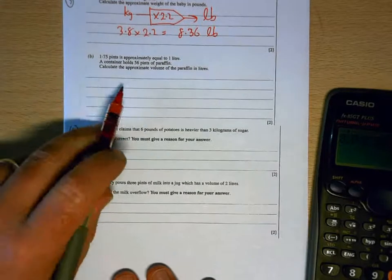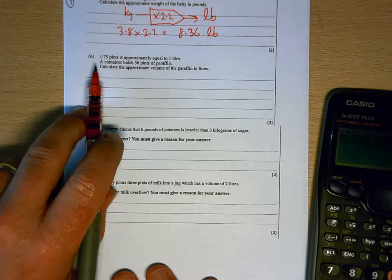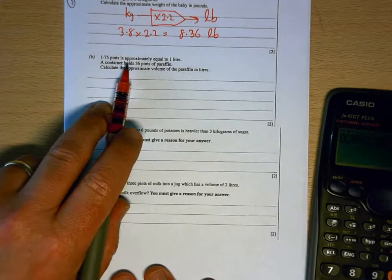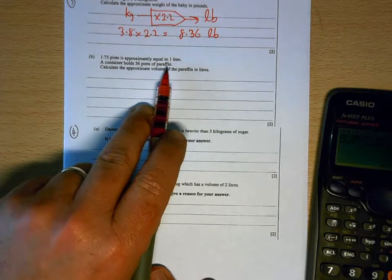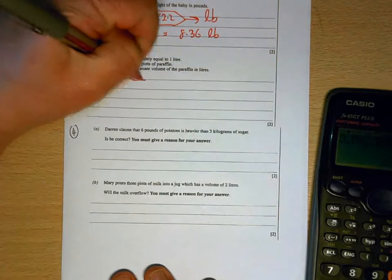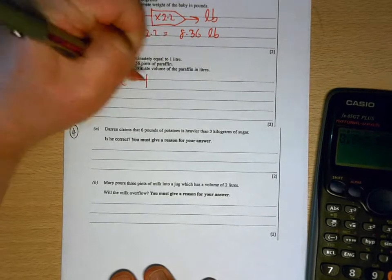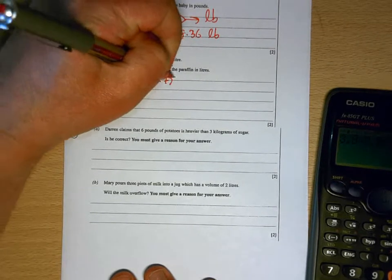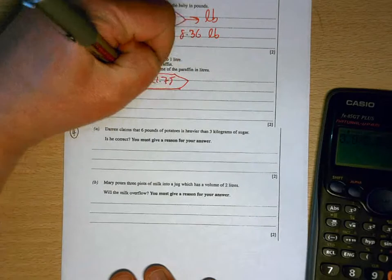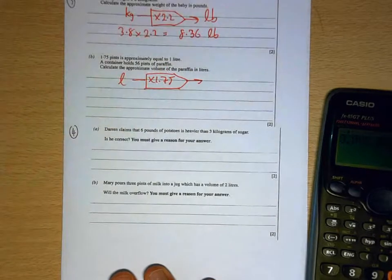Now with the second part, they are giving you a relationship. They're telling you that 1.75 pints is roughly equal to one liter. So as a number machine, if we've got liters on this side and we multiply them by 1.75, we get pints.